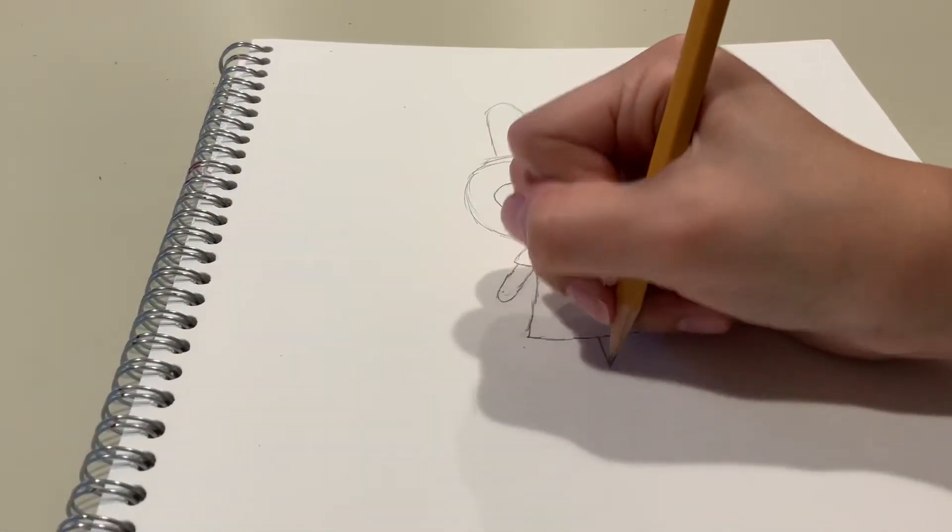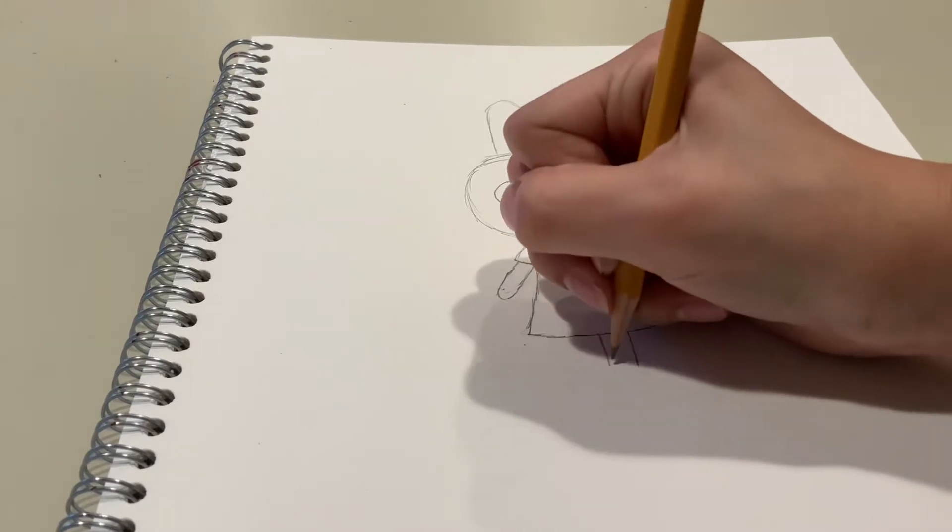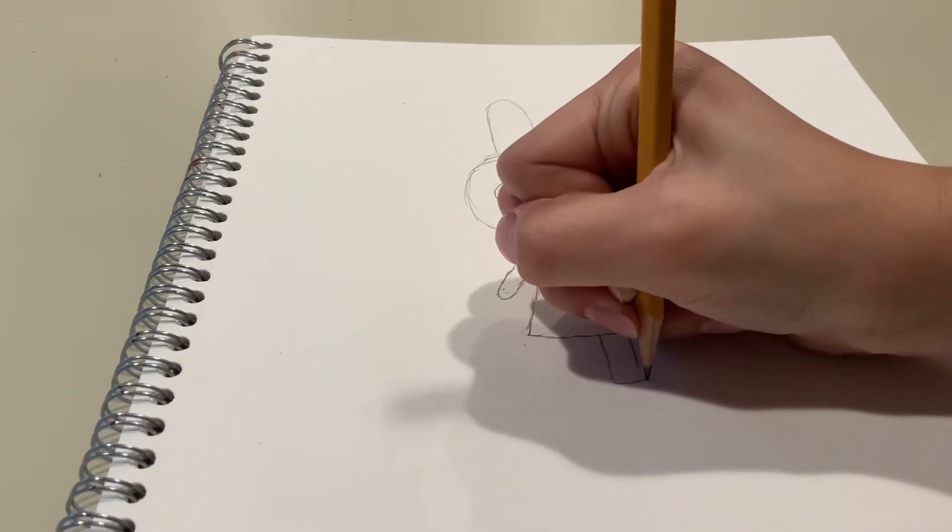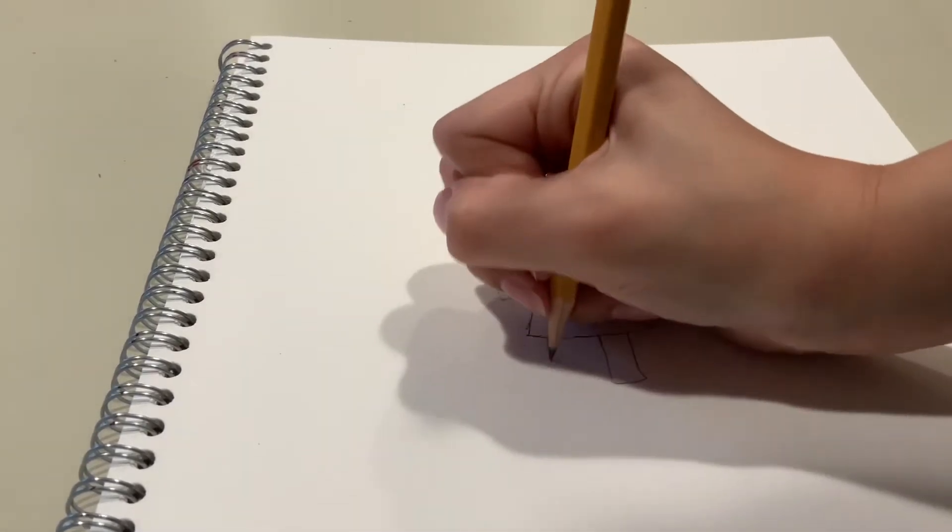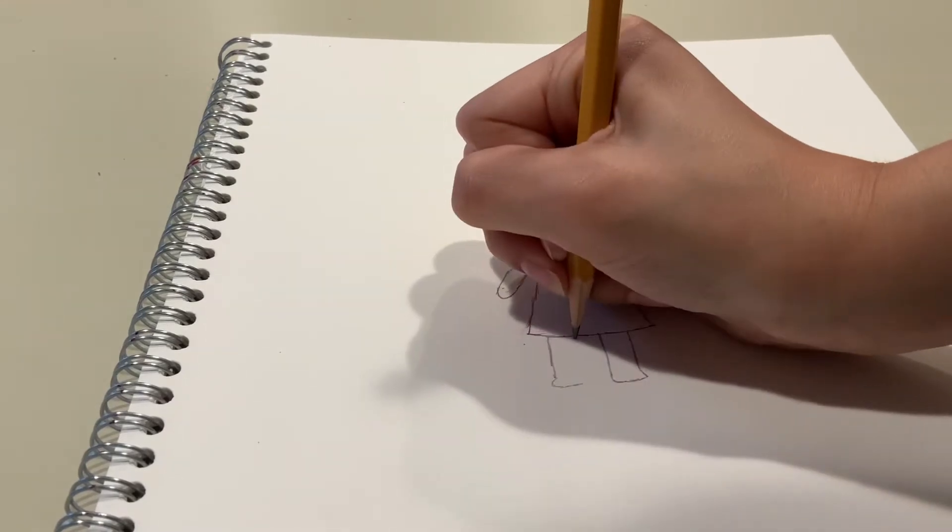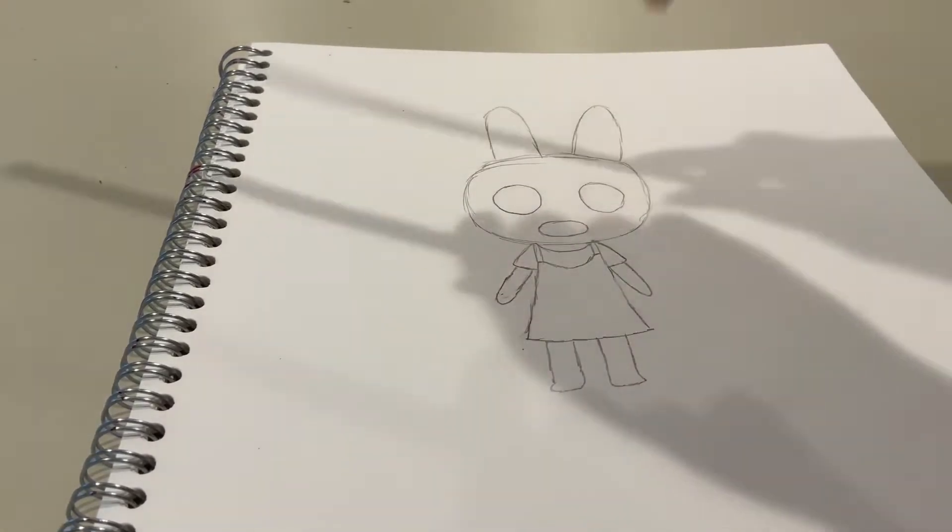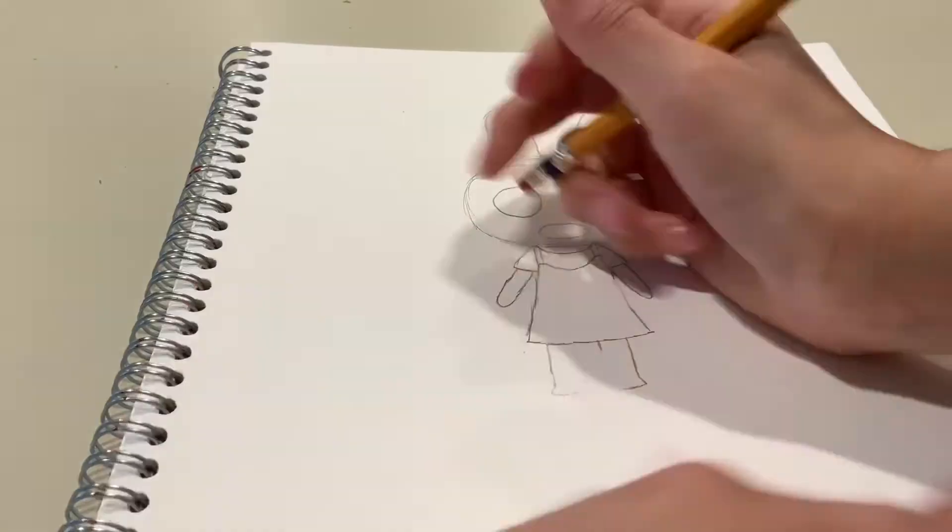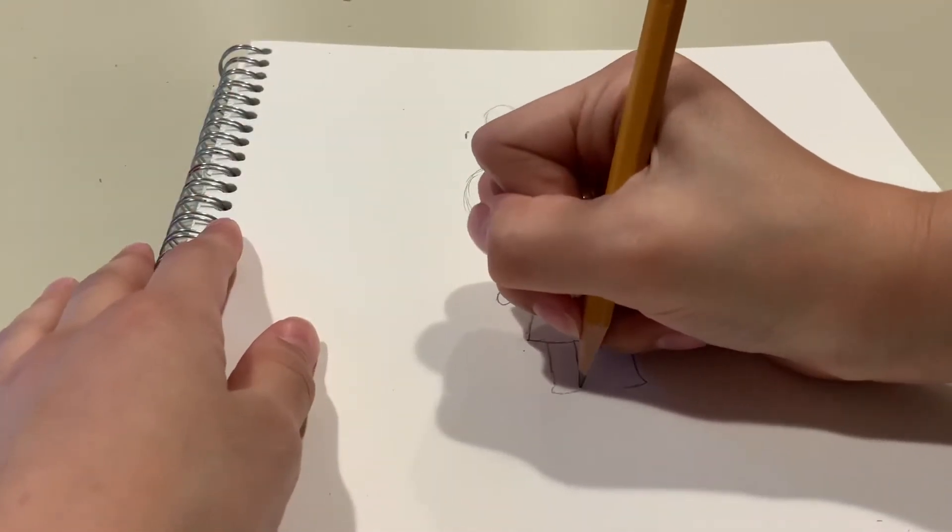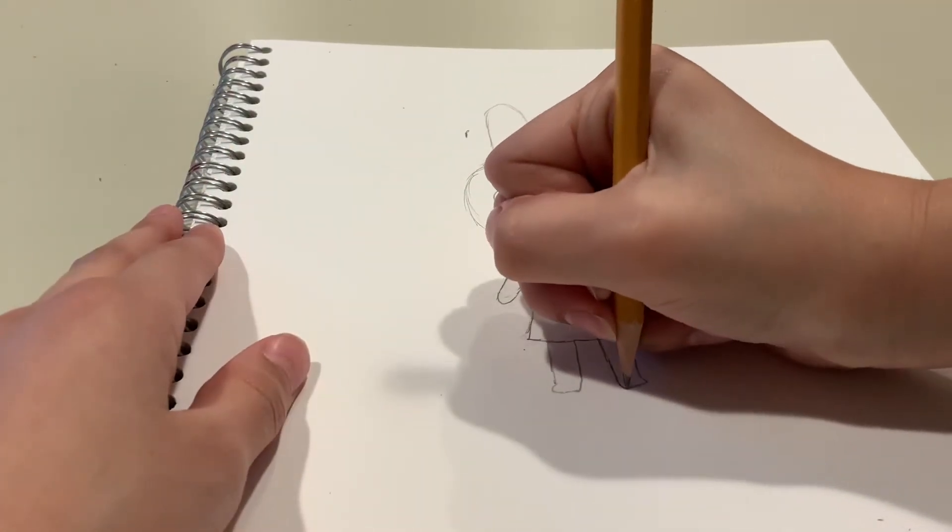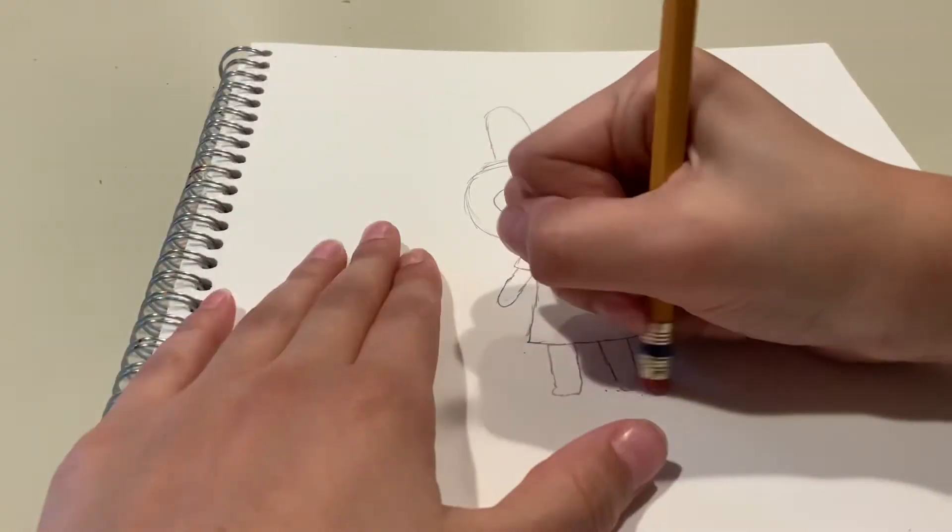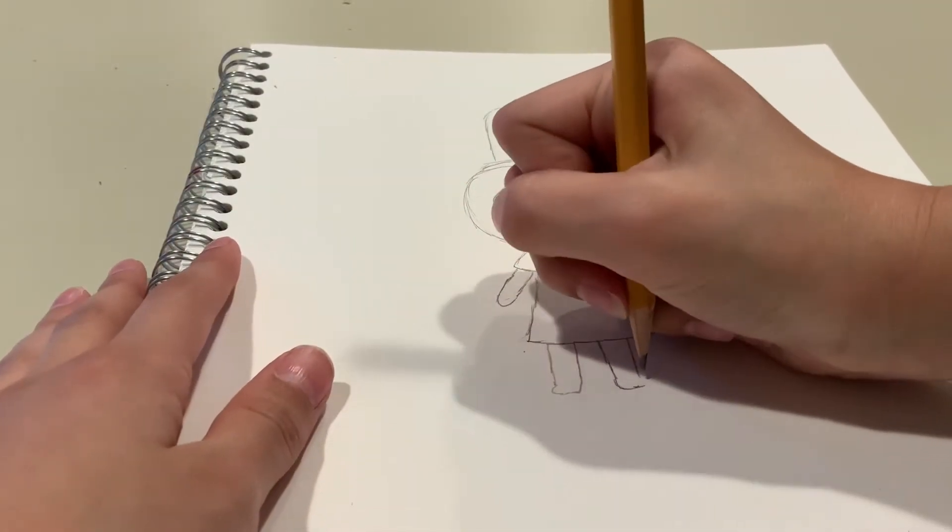I'm going to start sketching out her legs. And this Animal Crossing Villager does not wear shoes, so I am just deciding how I want her toes to be. I liked how the second one came out, so I'm just fixing up both legs to make them look the same. And I'm going to erase that little point because that was an idea, but I think I like the other one better.